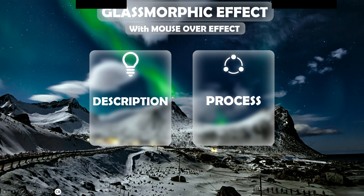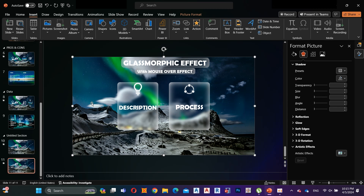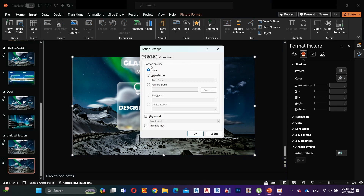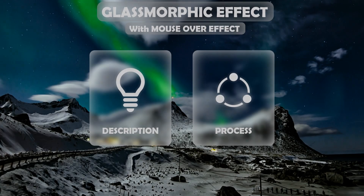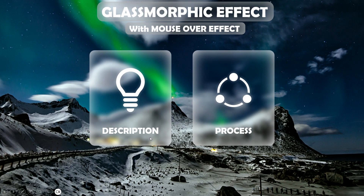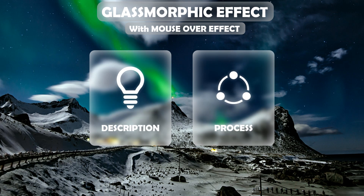Now let's see how we come back to the first slide. Go to the second slide, select the background photo, go to Action, select Mouse Over, and hyperlink to the previous slide. Now let's see how it works. It works perfectly — I think now you have a good idea about the mouse over effect.